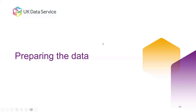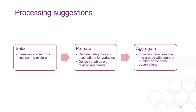Having decided that this data is worth looking at, there are a set of tasks because we're dealing with a large dataset. The 5% sample is just over 3 million records, which is quite unwieldy. First of all, define what you're going to look at — what variables and what records. Maybe you're interested in specific geographic areas, so you'd filter those out, or you're interested in people in households versus communal establishments.